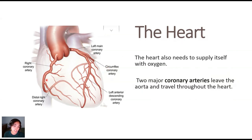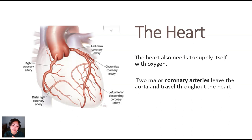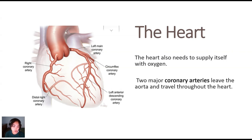The heart also needs to supply itself with oxygen, so we have these coronary arteries. You might have heard of coronary diseases, which are often associated with fat build-up and can lead to heart attacks. Coronary heart disease refers directly to the arteries oxygenating the heart — if that clogs up, the rest of our body won't function properly. Two major arteries leave the aorta and travel throughout the heart to ensure it stays oxygenated and has all the materials it needs.